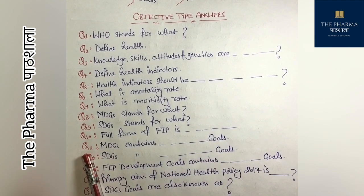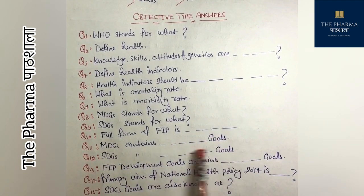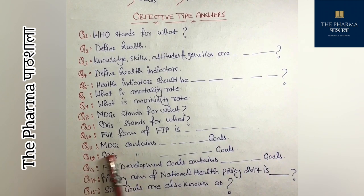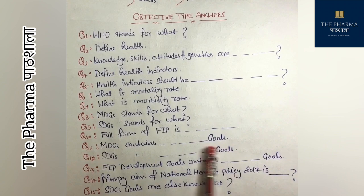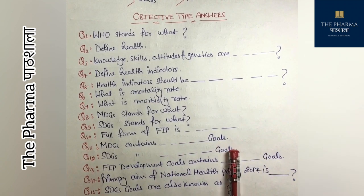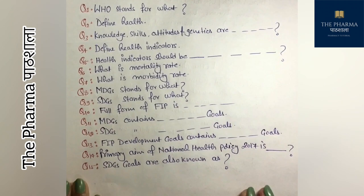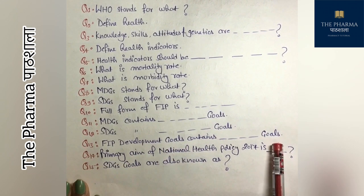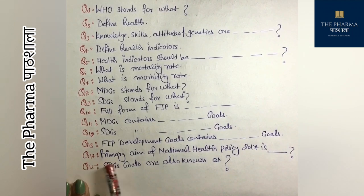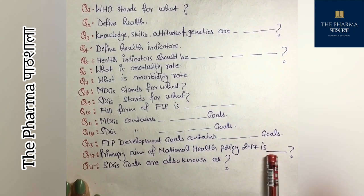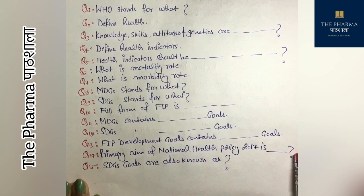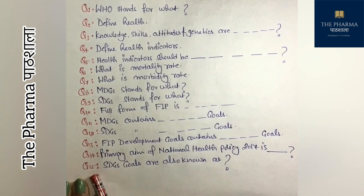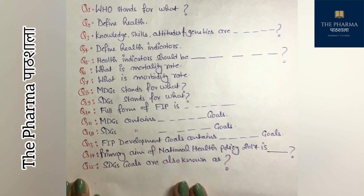Question 9: SDGs stands for what? Question 10: full form of FIP. Question 11: MDGs contains how many goals? Question 12: SDGs contains how many goals? Question 13: FIP development goals contains how many goals? Question 14: what is the primary aim of the National Health Policy 2017? Question 15: SDGs goals are also known as what?